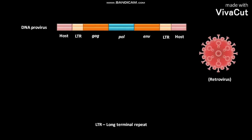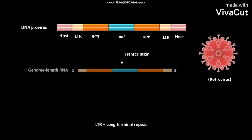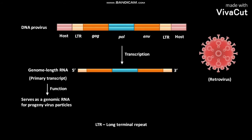This DNA provirus undergoes transcription to produce genome-length RNA. The genome-length RNA is the primary transcript. This primary transcript serves as a genomic RNA for progeny virus particles. The primary transcript consists of the GEC gene,